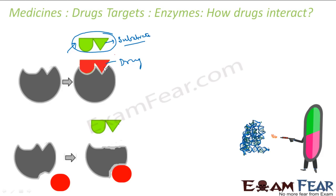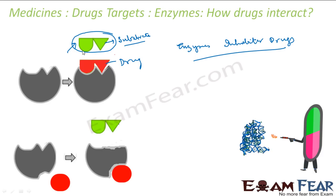These are called enzyme inhibitor drugs. These drugs compete with the natural substrate and inhibit the catalytic activity of the enzyme, because the drug binds to the active site and the substrate is unable to bind. This is called a competitive inhibitor. The second type is called an allosteric inhibitor.